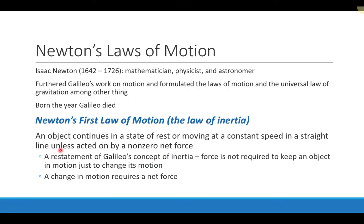Isaac Newton was born just a year or two after Galileo had passed away. He was a mathematician, physicist, and astronomer, and he basically furthered the work that Galileo had done considering how objects change, what a force is, and how a force is used to change the motion of an object.